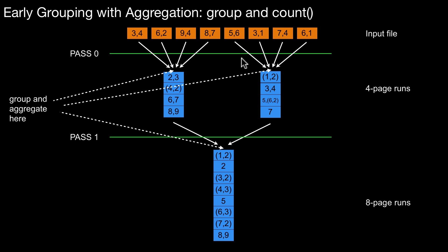Here we already run grouping and aggregation at earlier stages — at run generation and at intermediate merges — and we keep the grouping and aggregation at the final merge as well. So we have three points in time where we run sort-based grouping. Whenever you generate a run using quicksort or replacement selection, once you have the sorted sequence, you feed it directly into sort-based grouping and aggregation, and the output is written to disk. The same happens at every merge level.